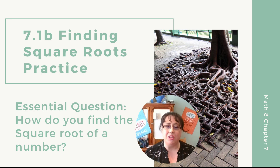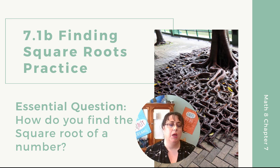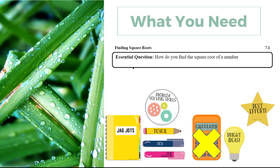Hi and welcome to Meetings in Math. You are here for section 7.1b, finding square roots practice problems. Our essential question is: how do you find the square root of a number? Today you will need your Jaguar notes on section 7.1, a pen or pencil, and highlighters may be helpful. You will not be using a calculator today, so bring your problem-solving skills, your bright ideas, and your best effort.